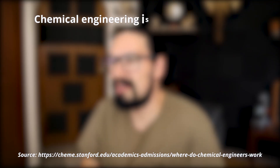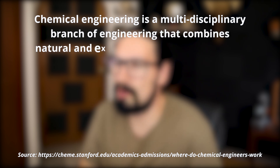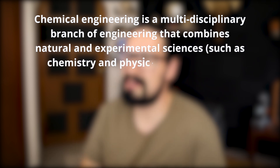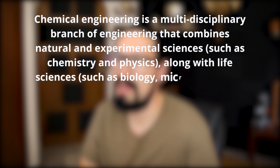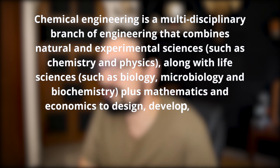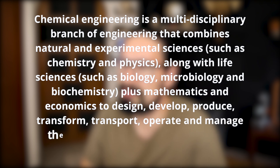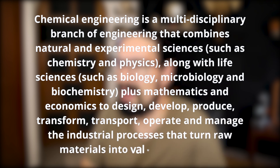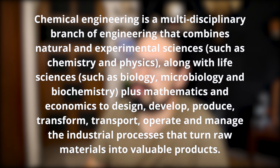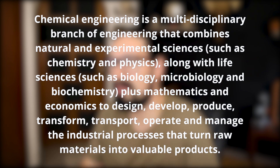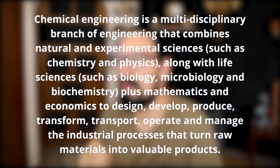Bear with me on this one — it's one of the longest definitions: Chemical engineering is a multidisciplinary branch of engineering that combines natural and experimental sciences, such as chemistry and physics, along with life sciences such as biology, microbiology, and biochemistry, plus mathematics and economics, to design, develop, produce, transform, transport, operate, and manage the industrial processes that turn raw materials into valuable products.